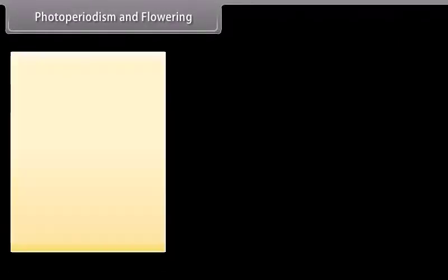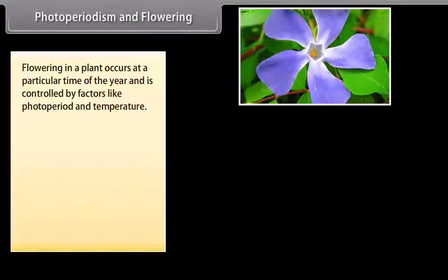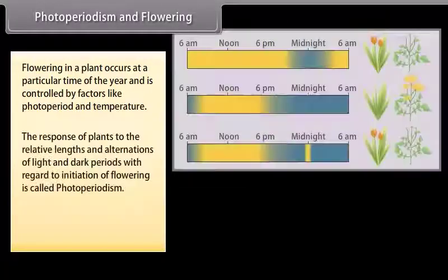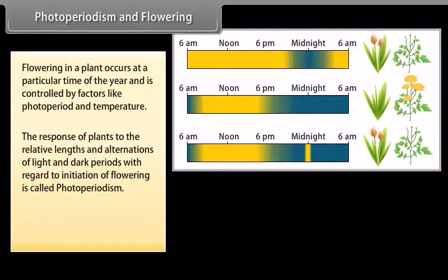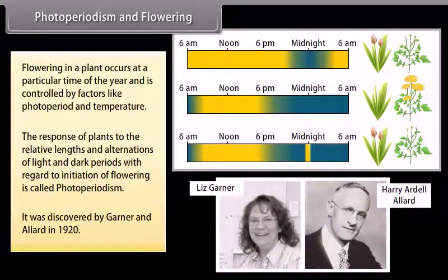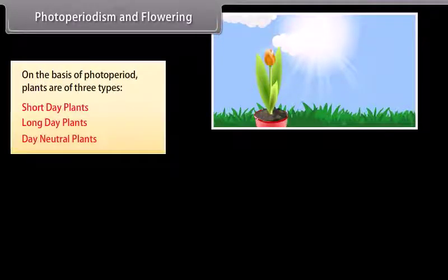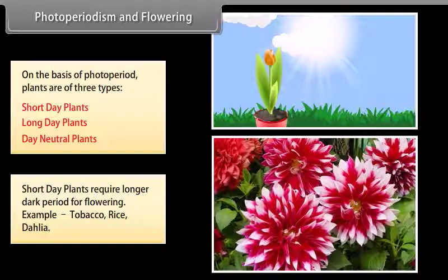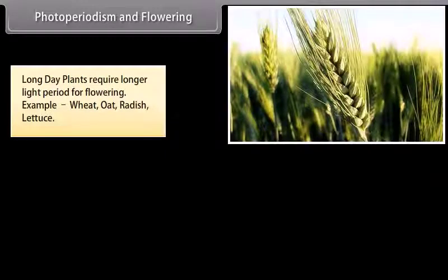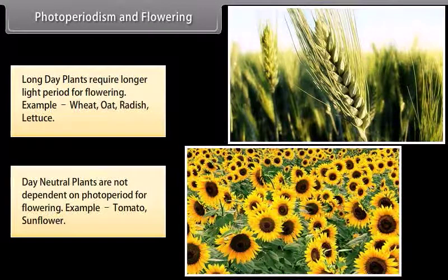Flowering in a plant occurs at a particular time of the year and is controlled by factors like photoperiod and temperature. The response of plants to the relative lengths and alternations of light and dark periods with regard to initiation of flowering is called photoperiodism. It was discovered by Garner and Allard in 1920. On the basis of photoperiod, plants are of three types: short day plants, long day plants, and day neutral plants. Short day plants require a longer dark period for flowering — examples include tobacco, rice, and dahlia. Long day plants require a longer light period — examples include wheat, oat, radish, and lettuce. Day neutral plants are not dependent on photoperiod for flowering — examples include tomato and sunflower.